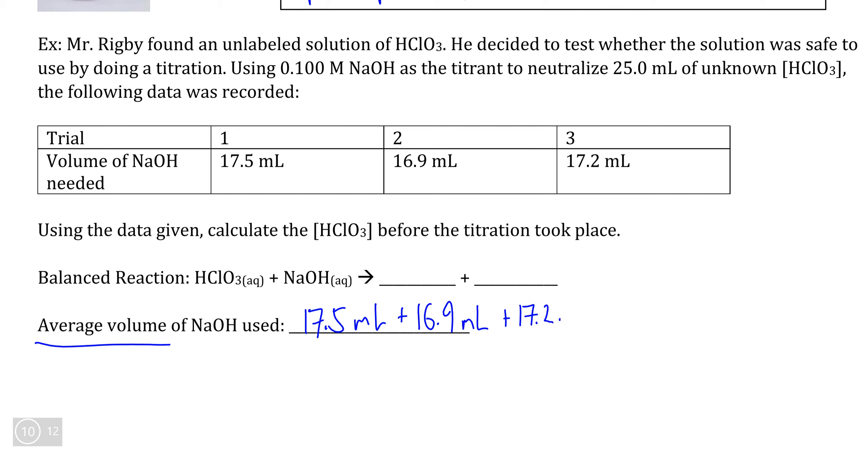Conveniently, this number comes out to being exactly 17.2 milliliters, and this is the volume of the NaOH, our titrant, that we added. We can quickly convert this into liters because that's what we would need in order to use this with concentration calculations.